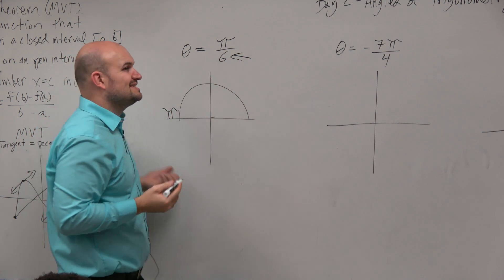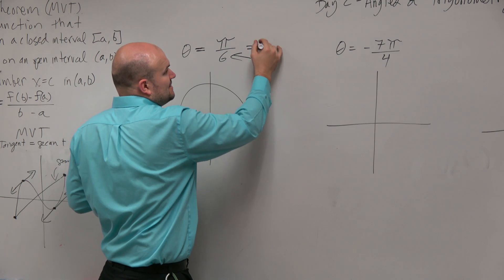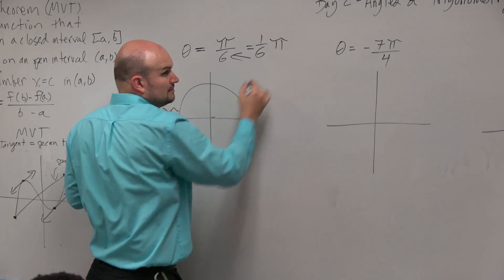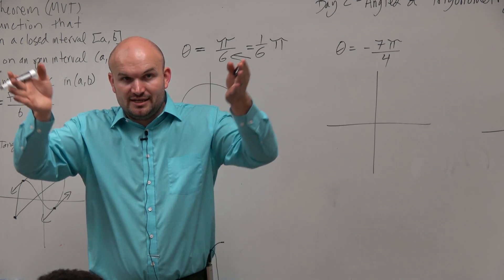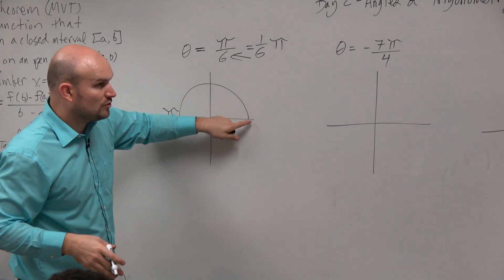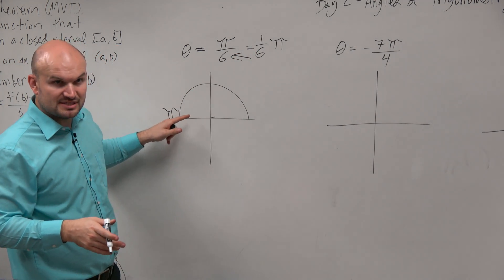Now, we want one sixth of that, right? Pi over 6 is the same thing as one sixth of pi. So just like you take a candy bar and you break it up into six parts, you're taking pi, which is the rotation from here to here, and breaking it up into six parts.